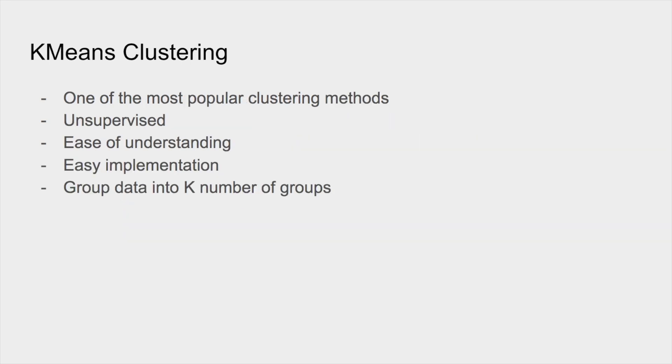K-means clustering is actually a method of clustering and it's probably the most popular one. It is an unsupervised learning method, so we have no class labels or previous information about the data. We don't know which group it belonged to first. The reason it's so popular is because it's easy to understand and implement.